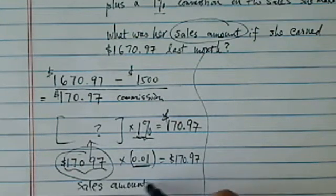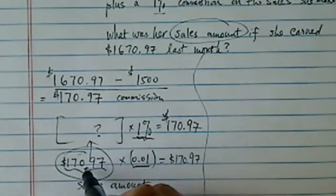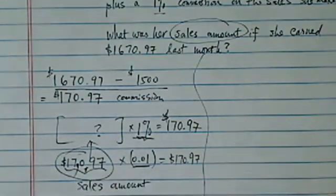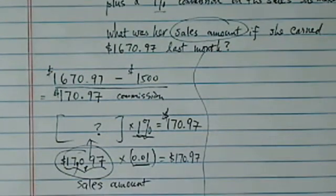Basically she sold, let's see, make sure I get my decimals right, $17,097. It's a pretty good month for her, for anyone I guess. Maybe it's not as good, okay.